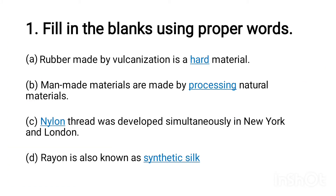Question one: Fill in the blanks using proper words. A) Rubber made by vulcanization is a hard material. B) Man-made materials are made by processing natural materials. C) Nylon threads were developed simultaneously in New York and London. D) Rayon is also known as synthetic silk.